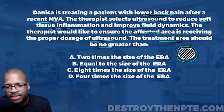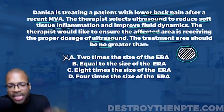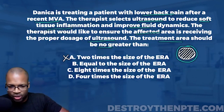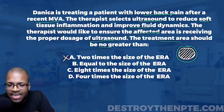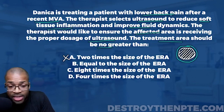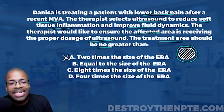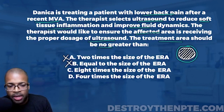B says equal to the size of the ERA — definitely not. We do not want the treatment area to be the same size as the ERA because that ultrasound head would stay directly over that tissue, creating a serious burn risk. C says eight times the size of the ERA — that's much too big. A treatment area that large means the target tissue won't receive adequate dosage.